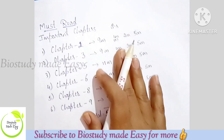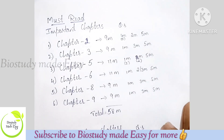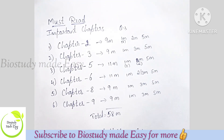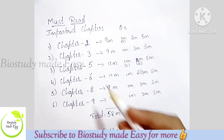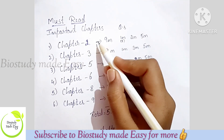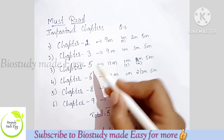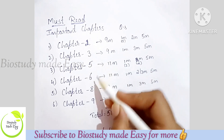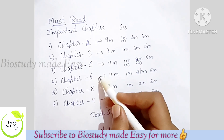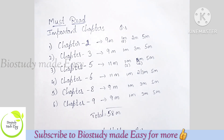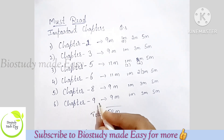So now the must-read chapters. Chapter 2: Sexual Reproduction in Flowering Plants. Human Reproduction. Principles of Inheritance and Variation. Chapter 6: Molecular Basis of Inheritance. Chapter 8 and Chapter 9.